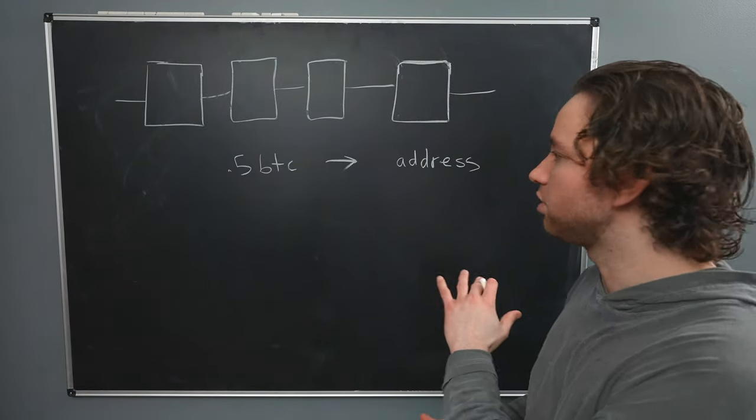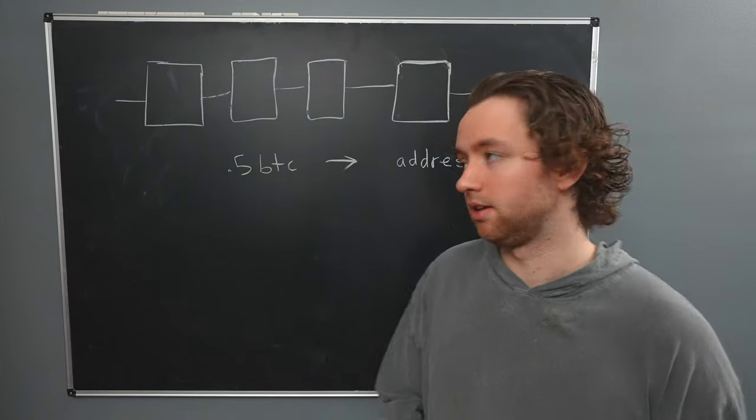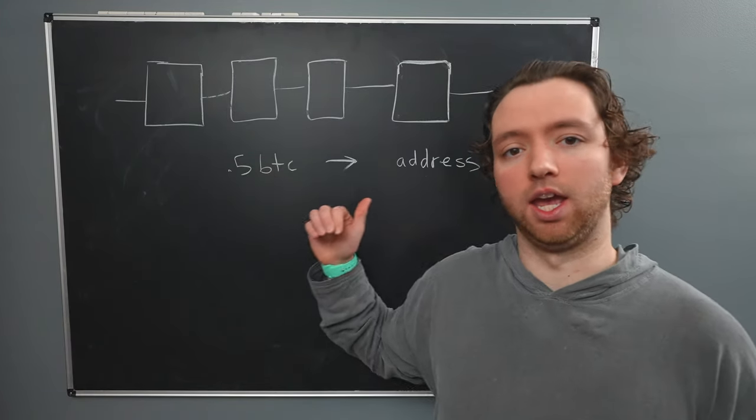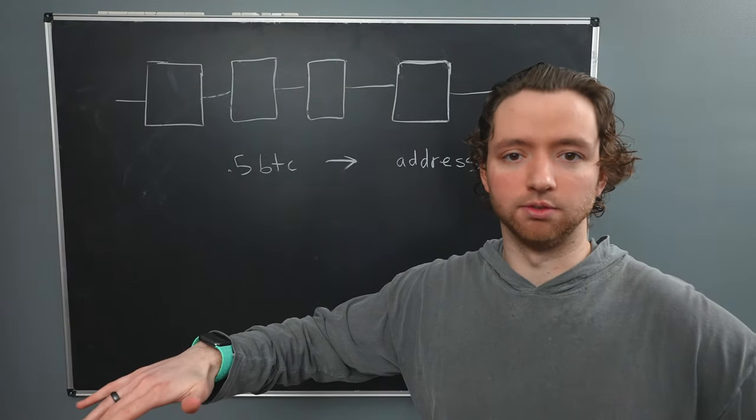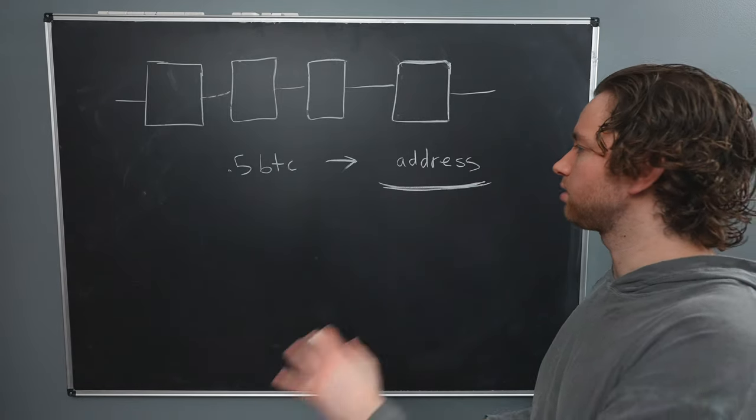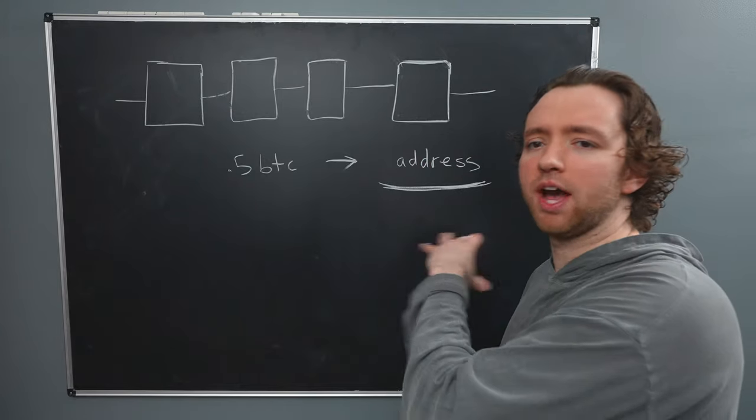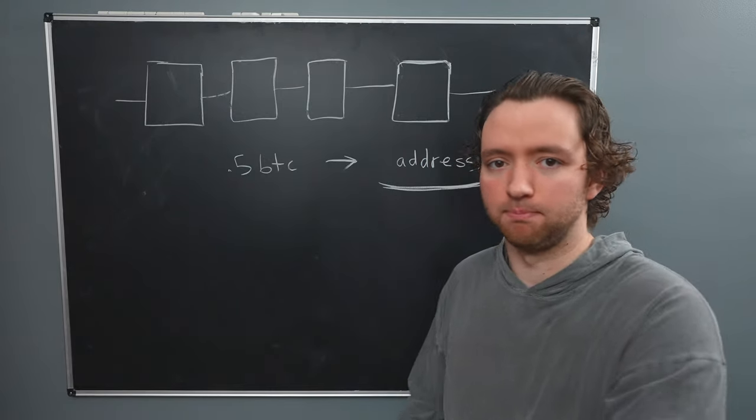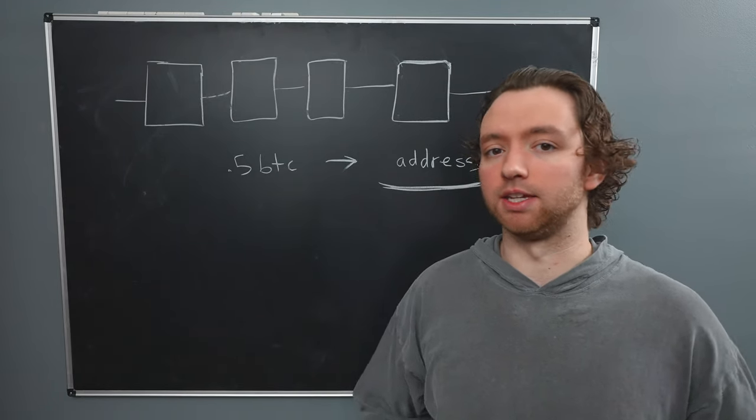And also be aware that every blockchain is going to be different. So if you send Bitcoin to a Bitcoin cash address, that's a good way to lose your money. Now, here's the question. This address, how does the blockchain know that this is you? How do you have permission to then spend that money?